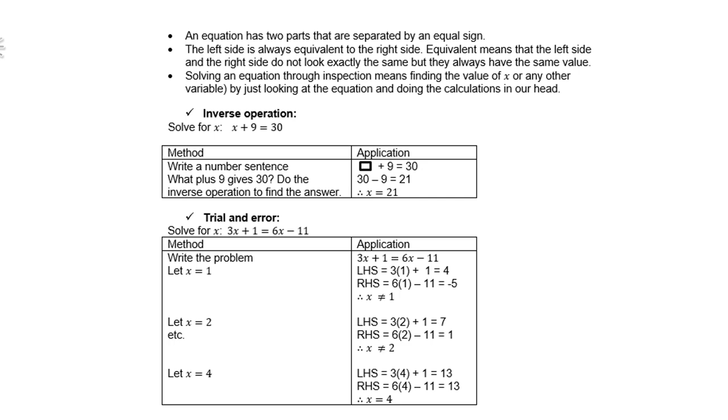Then you can also do what we call trial and error method. Solve for x: 3x plus 1 equals 6x minus 11. Let's test whether x equals 1 is working. If you test 1 on the left-hand side, you will see that the left-hand side is 4. If I do the same on the right-hand side, I get negative 5, so the two sides are not equal. Then we try and let x be 2, we again notice that the left-hand side and the right-hand side are not equal. When you try 4, you get 13 on both sides. This is a method which, of course, takes long, but it is a method nevertheless.